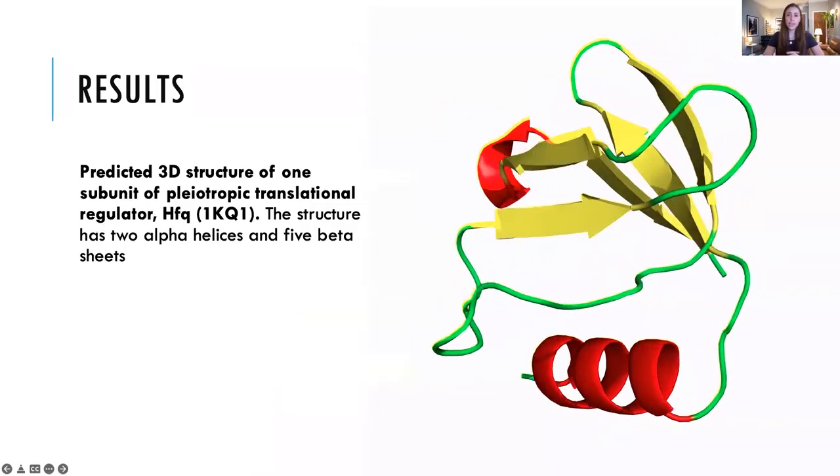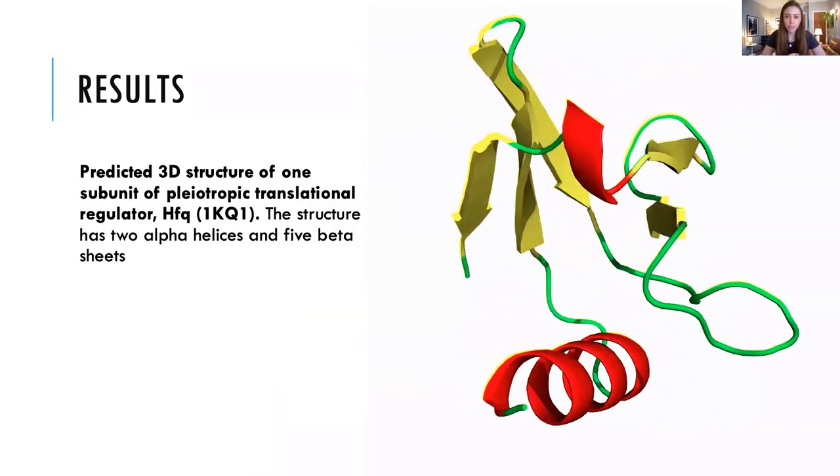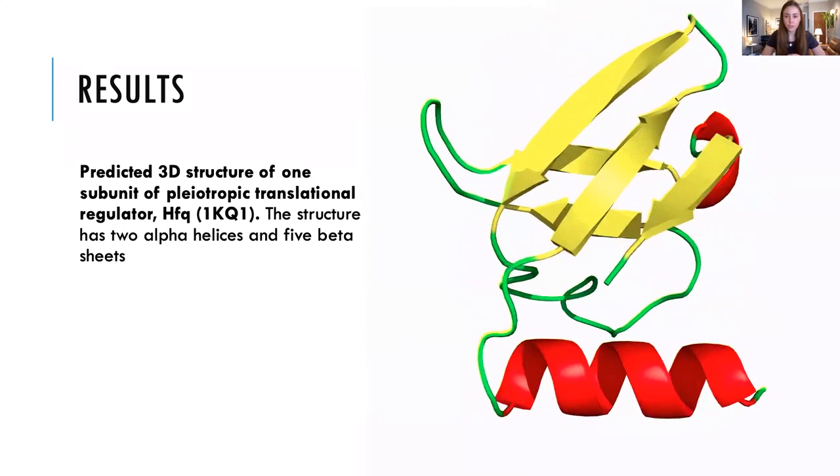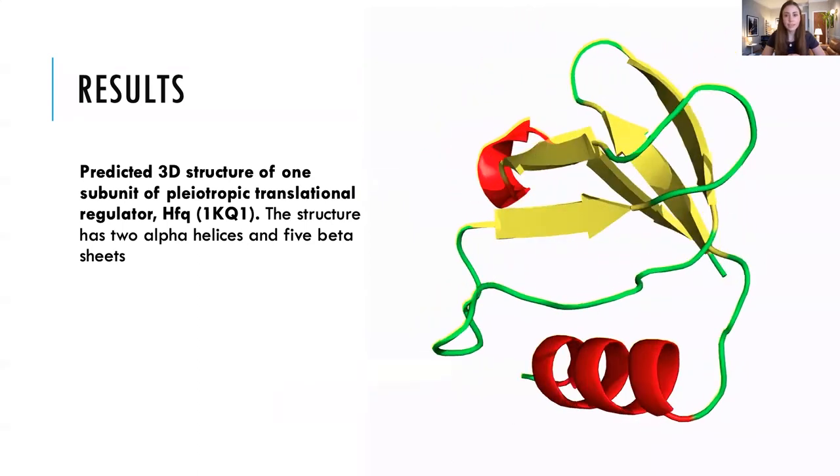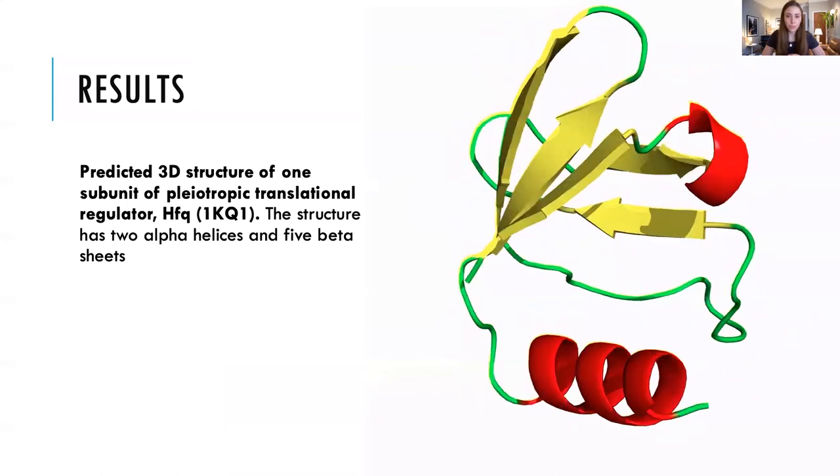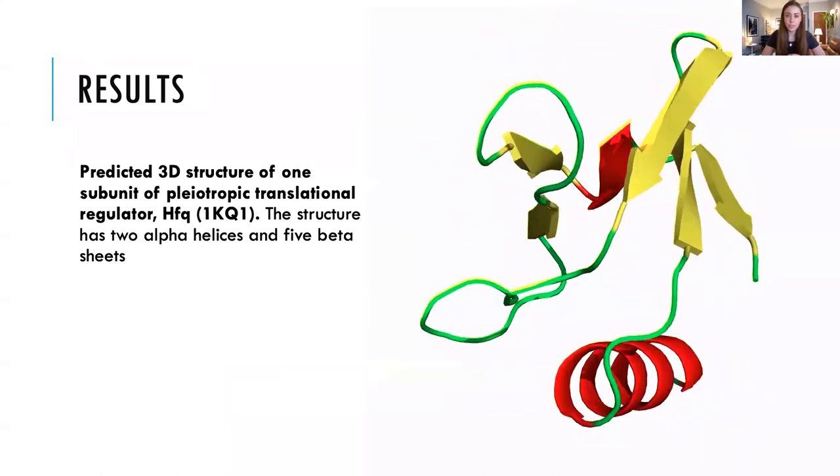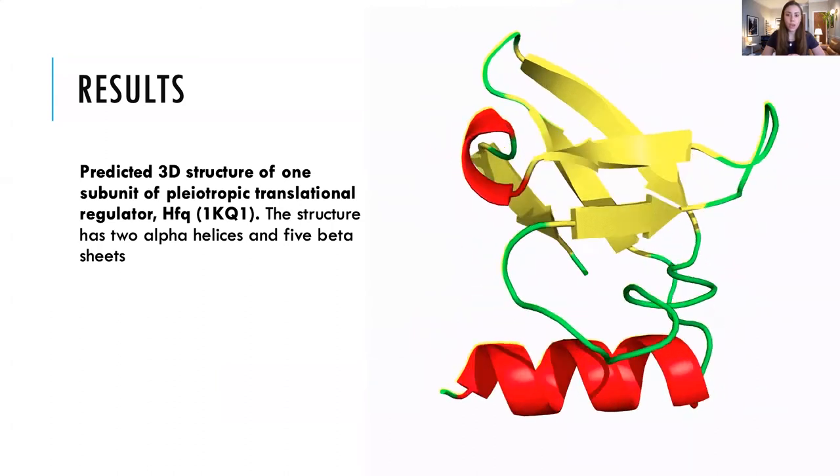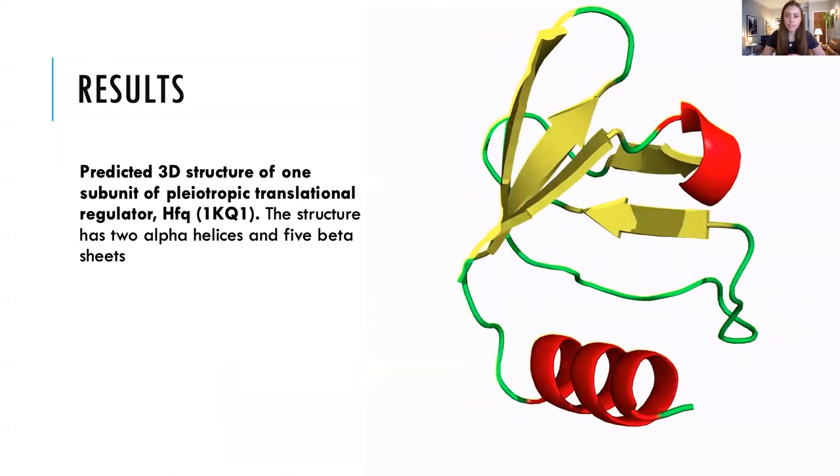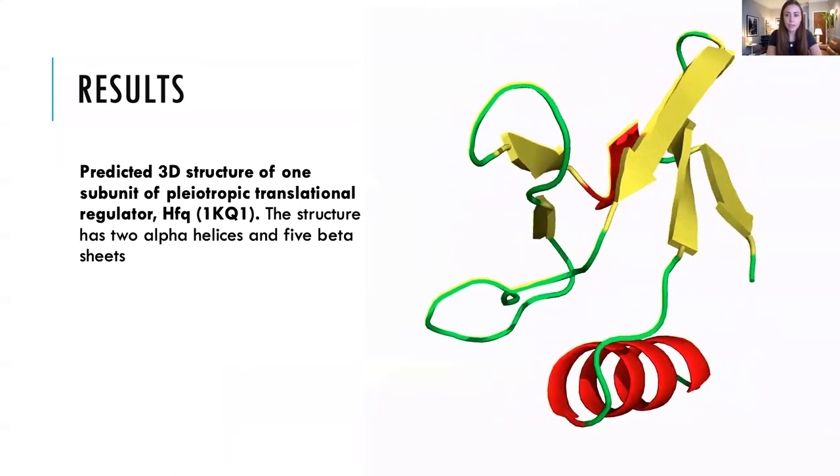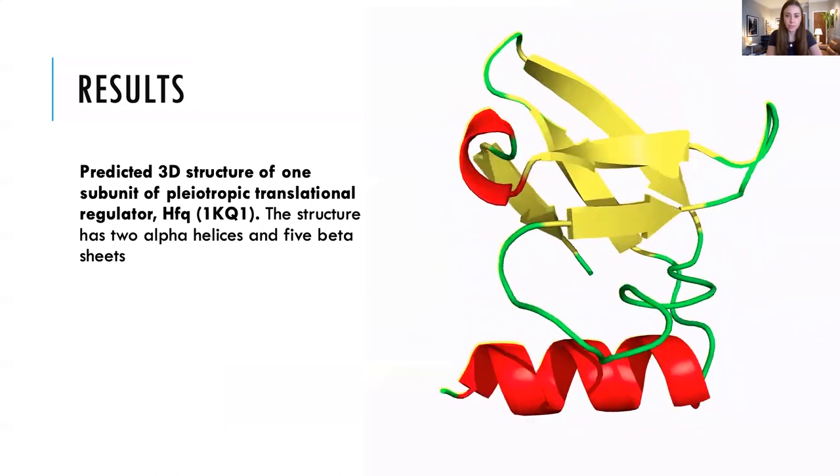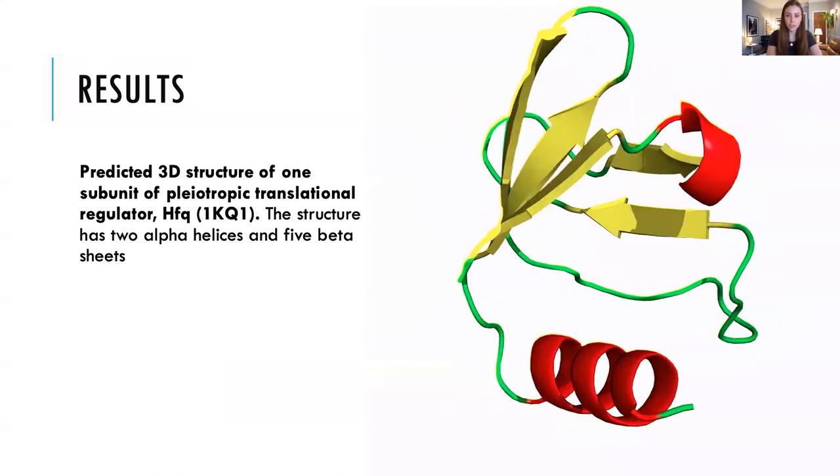So to visualize the predicted structure of the HFQ protein, Orion was used. Orion utilizes an algorithm that utilizes other proteins with known structures and a matching sequence to make predictions on the structure of a protein, in this case of one subunit of pleiotropic translational regulator, HFQ.